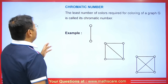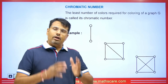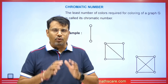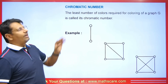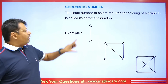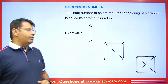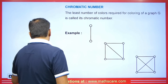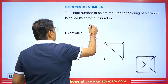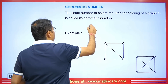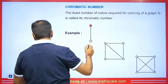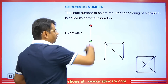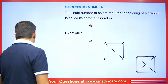The chromatic number represents the minimum number of colors required to color a graph such that no two adjacent vertices share the same color. For example, we will use two colors: starting with red for one end, and a different color for the second end. This demonstrates that a minimum of two colors is used, so this forms a two chromatic graph.